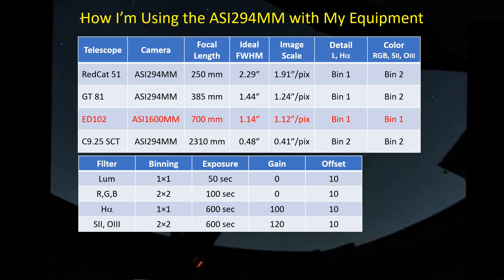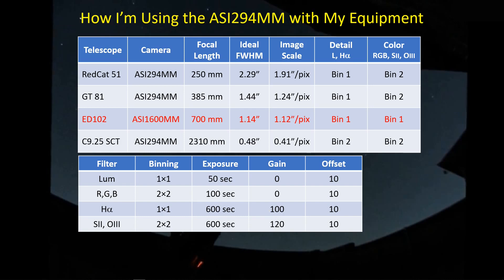I put out a video sometime back when I first got the camera, looking through the specs and deciding what my strategy would be and how I would use this camera. The luminance filter is a detail filter, so I'd be using 1x1 binning, and a 50-second exposure seems to work okay. With my RGB filters, when I'm shooting a galaxy for example, I just want the RGB for color, so I'll be using BIN-2 mode, a 100-second exposure, and staying with Gain 0. With SHO type nebula images, I'll be using the HA filter for detail, so I'm back to BIN-1 mode, and I selected Gain 100. You can listen to my rationale in the other video — I'll put the link in the description.